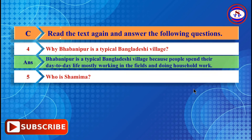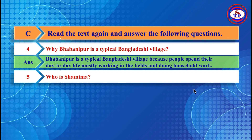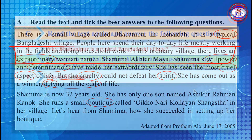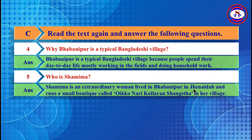Number 5: Who is Shamima? Look at the specific part of the passage to answer this question. Your answer is: Shamima is an extraordinary woman who lives in Babanipur in Jinaida and runs a small boutique called Aiko Nari Kallan Shonsta in her village.